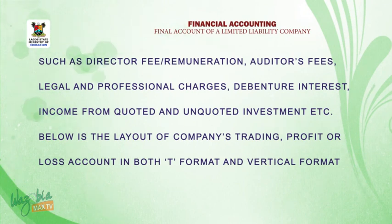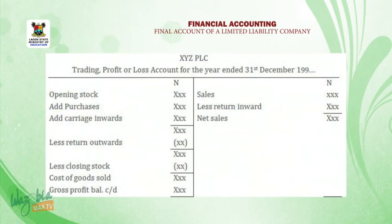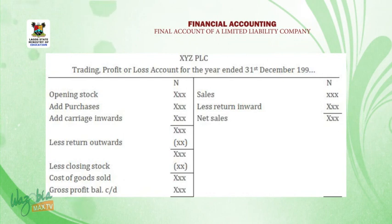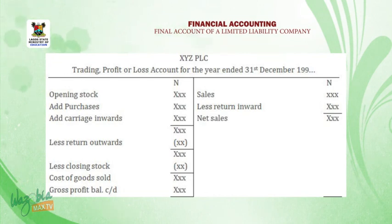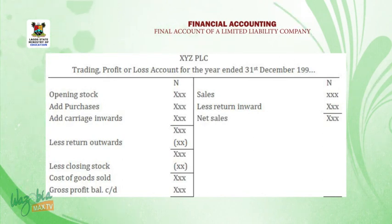We now look at the layout of a company's trading profit or loss account in both T-format and vertical format. For the T-format, you draw your T-ledger and give it a heading: XYZ PLC, trading profit or loss account for the year ended 31 December 19--. On the debit side, we have opening stock; we add purchases and carriage inward to get a subtotal, then less return outward to get cost of goods available for sales. Less closing stock gives us cost of goods sold.